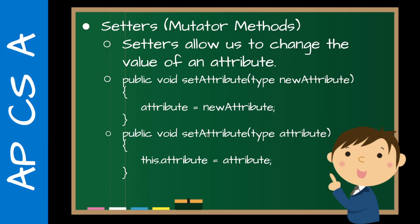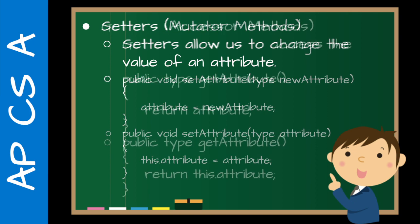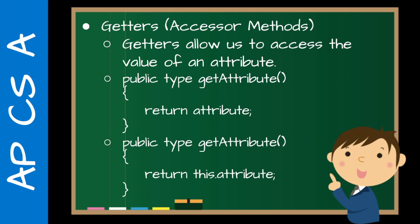The method that I prefer to do is: public void setAttribute(type attribute), this.attribute equals attribute. So setName(type name), this.name equals name. One of the reasons I prefer this is, A, it's just very clear, but B is for my students coming from Python — in Python we use self, and self and this are basically equivalent. So it's a little bit easier for them to adjust to this style. And so that's how we set values.